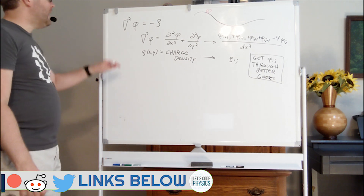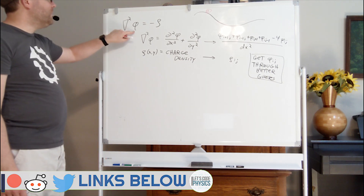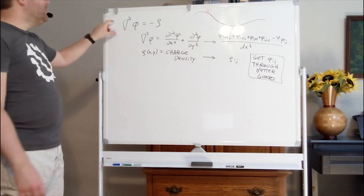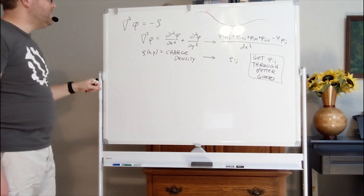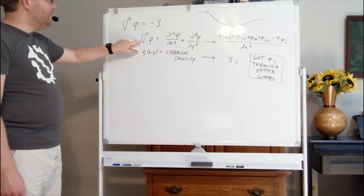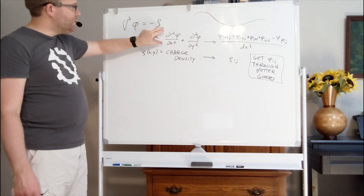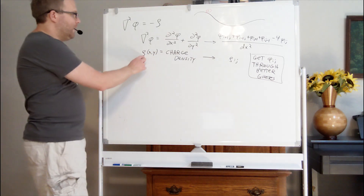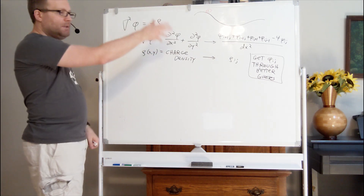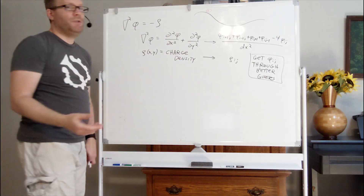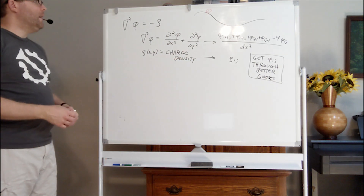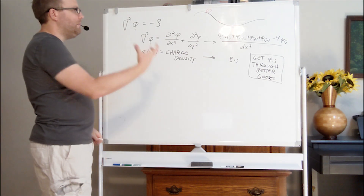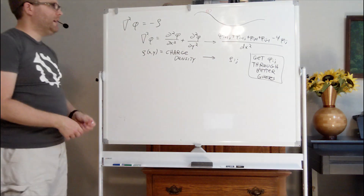We've been studying for the last several episodes how to get the electric potential based on a charge density. This problem is governed by Poisson's equation, where the Laplacian — del squared — is two derivatives in the x direction plus two derivatives in the y direction. Rho here is a function of position, the charge density. In regions where you get a maximum in phi, that's where you have positive charge; regions where you get a minimum in phi is where you have negative charge.